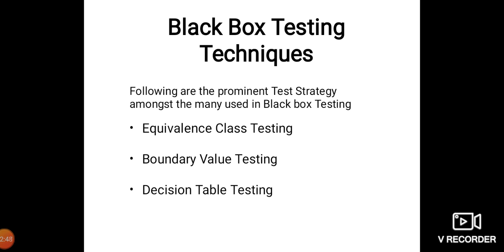The second technique is boundary value testing, which focuses on the values at boundaries. This technique determines whether a certain range of values is acceptable by the system or not. It is very useful in reducing the number of test cases and is most suitable for systems where input is within certain ranges. The third technique is decision table testing, which puts inputs, causes, and their effects in a matrix, with a unique combination for each domain.